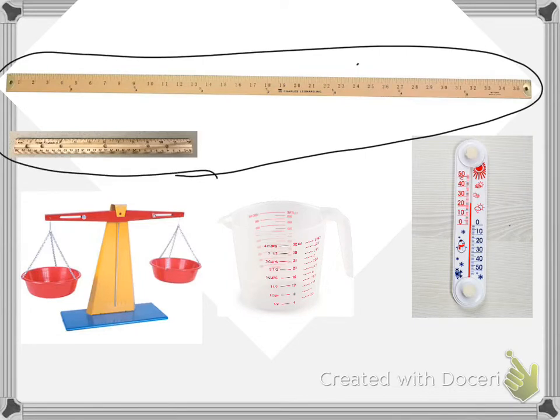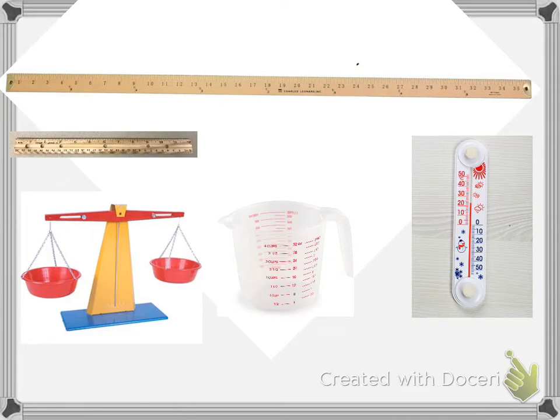When we measure longer distances, we use a yardstick because it's much longer than a ruler. A meter stick is another name for it. It looks like a long ruler. Now in a meter stick there are 100 centimeters, and on a ruler there are 30 centimeters.